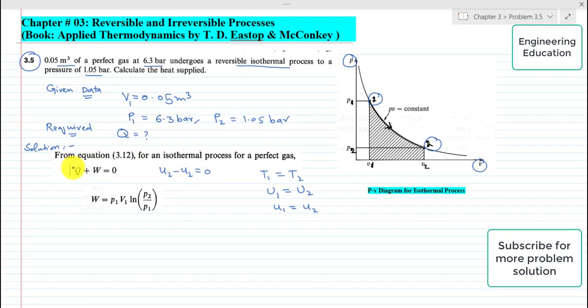Also, if we write the expression for the work done, already derived in the text of the book, the final expression for the work done for an isothermal process for a perfect gas is W = P₁V₁ ln(P₂/P₁).